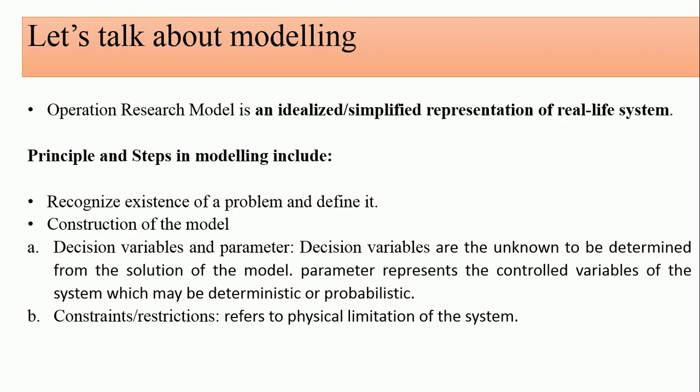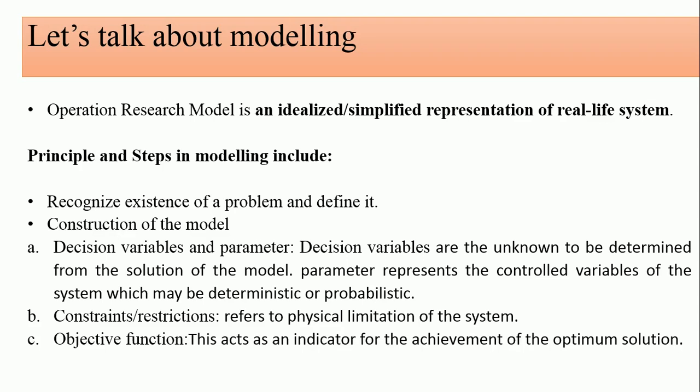In constructing your model, you also need to know the constraints — the physical limitations and restrictions of the system. Decision variables, parameters, and constraints are very important. Lastly, your objective function is an indicator for the achievement of the optimum solution. If you don't know your objective function — whether maximization or minimization — it will be very difficult to implement your solution correctly.